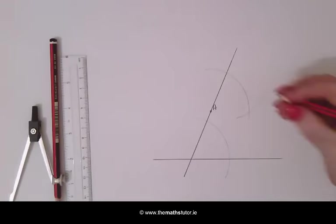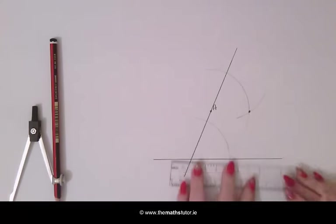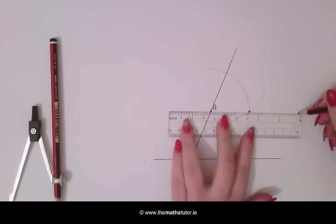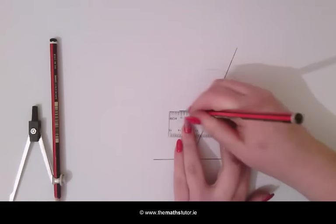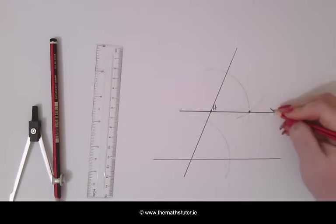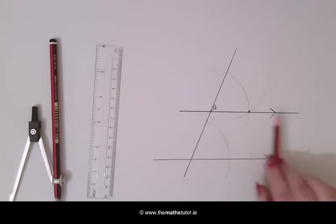We are going to mark this point of intersection and using a straight edge we are going to join this to A. And as we can see, we now have a parallel line to our given line passing through A.